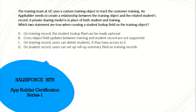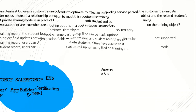On the training record, the student lookup field can be made optional — yes, lookup fields can be optional. Cross-object field updates between training and student records are not supported — true. On the training record, users can delete students if they have access — no, you cannot delete in a lookup. On student records, users can set up roll-up summary fields on training records — no, you cannot do that in a lookup either. So the correct answer is A and B.